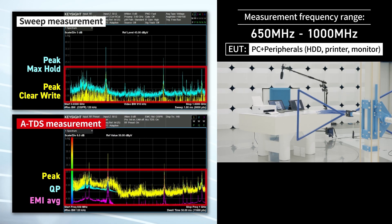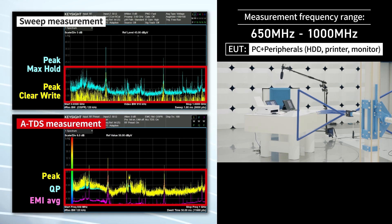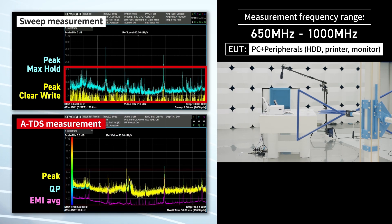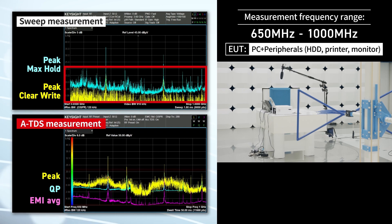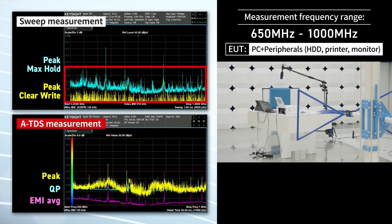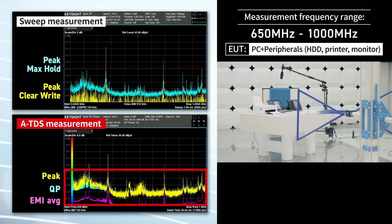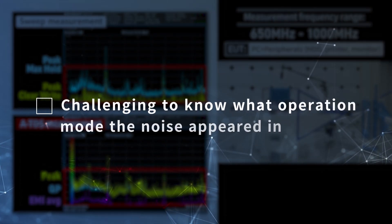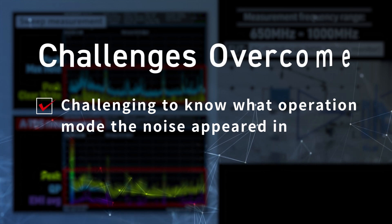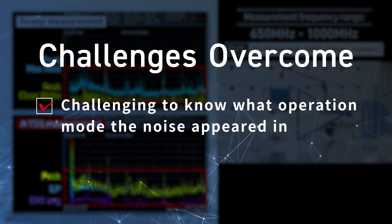Let's look at the noise at another frequency range. During measurement using ATDS, you can see noise varying in sync with the printer's behavior. This behavior is not observed with traditional sweep measurements. With the ATDS feature, you can quickly understand the operation mode used when the noise was generated.